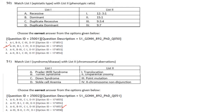Match epistasis type with phenotypic ratio: Recessive epistasis gives 9:3:4; Dominant epistasis gives 12:3:1; Duplicate recessive gives 9:7; Duplicate dominant gives 15:1. Answer is option 2: A3, B1, C4, D2.